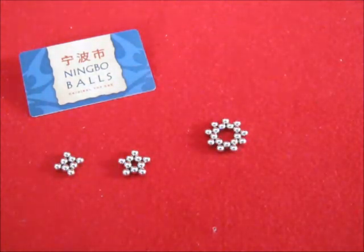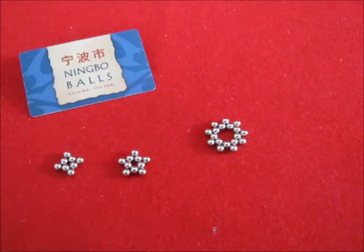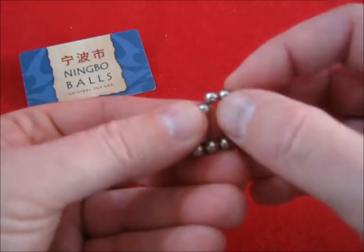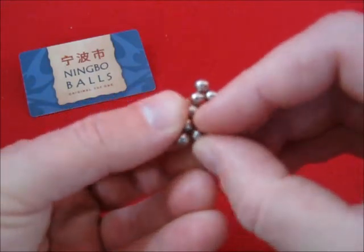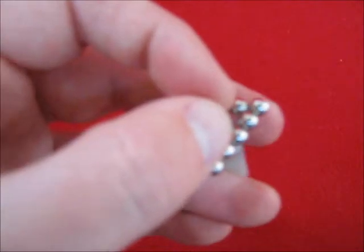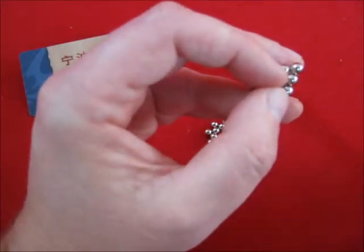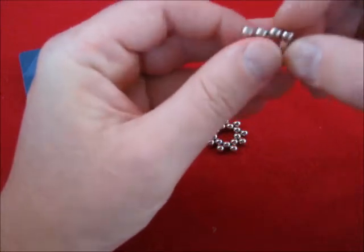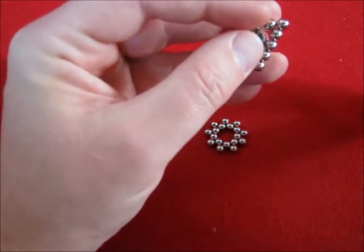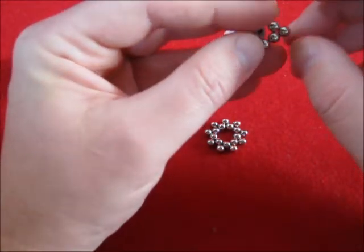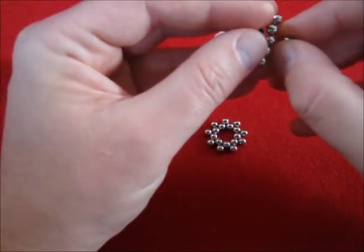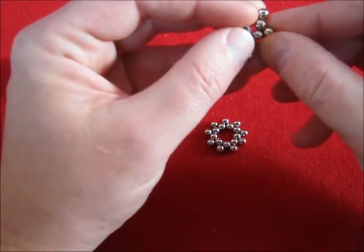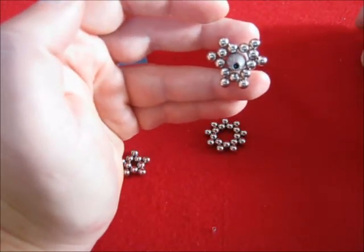Let's go to the 9 pointed star, which is a very unstable shape. Tough to make. Start with 12 and make a triangle. Like that. Now we need a whole bunch of single balls to make the star. Now this is the basic shape that you have to get in between.